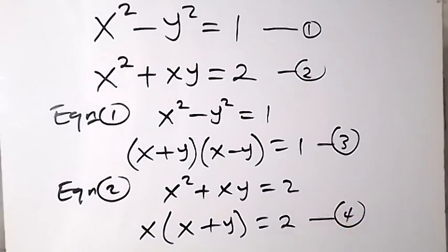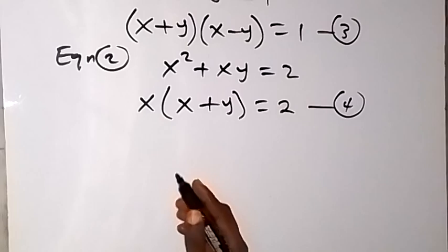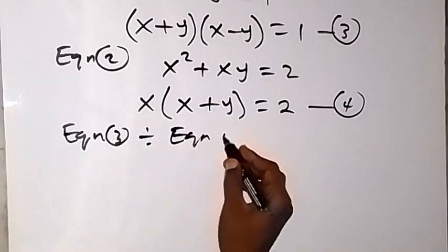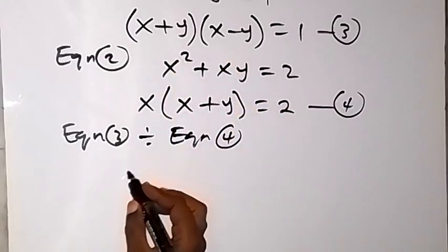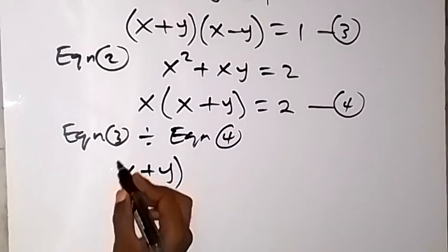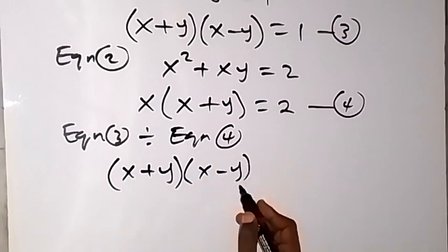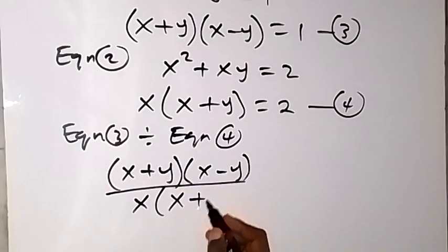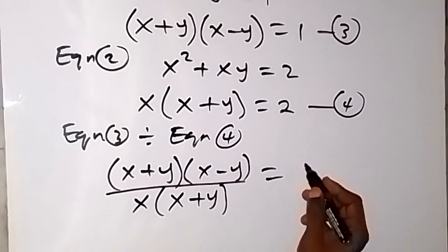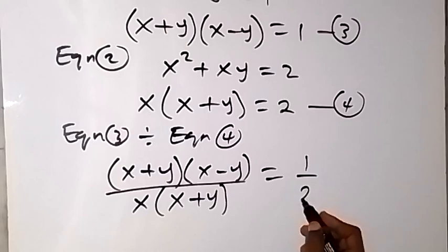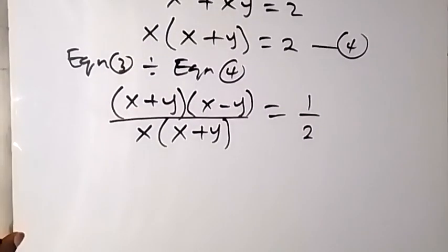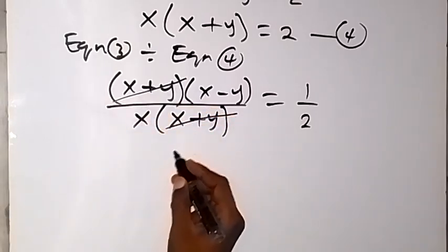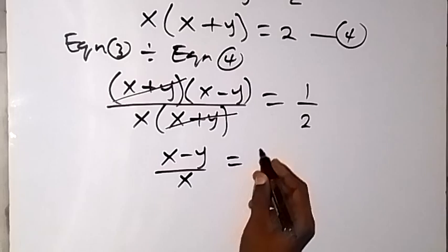Now from here, let's divide equation 3 by equation 4. We have equation 3 as x plus y multiplied by x minus y on the numerator, and equation 4 as x times the bracket x plus y on the denominator, which equals 1 over 2. We can cancel the x plus y terms, and we are left with x minus y over x equals to 1 over 2.